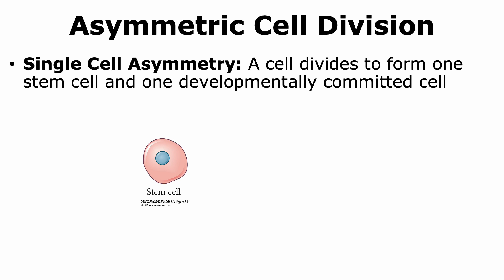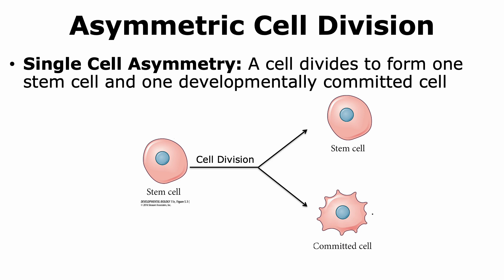Stem cells can also show asymmetric cell division. In asymmetric cell division, there are two major types. The first type is single cell asymmetry. In this case, one stem cell will divide to form another stem cell as a daughter cell, but the second daughter cell will continue to differentiate to form a developmentally committed cell. So in the case of single cell asymmetry, when the cell undergoes cell division, one of the daughter cells will be a stem cell, whereas the other daughter cell will become a committed cell.